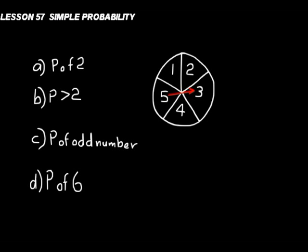Okay, so in A, the probability of landing on a 2. Well, there's one desired outcome here, a 2. So, that would be the numerator of my probability fraction. There's five possible numbers it could land on. So, it's 1 over 5. That's the probability. 1 in 5, basically.